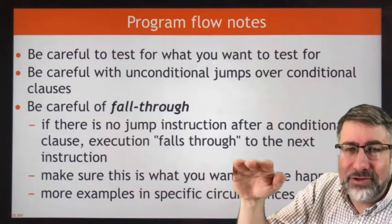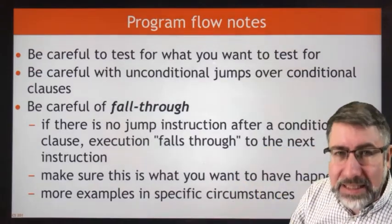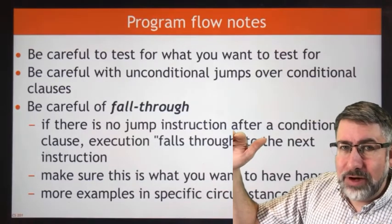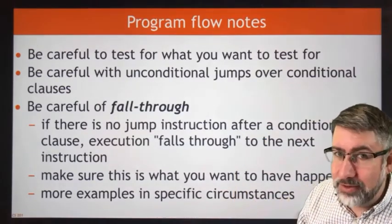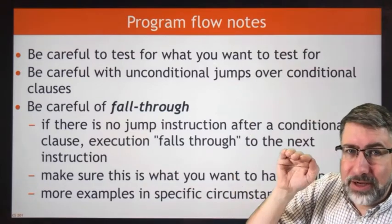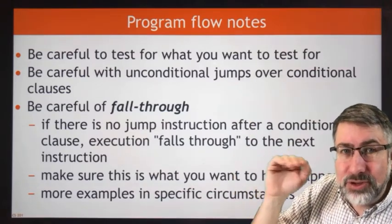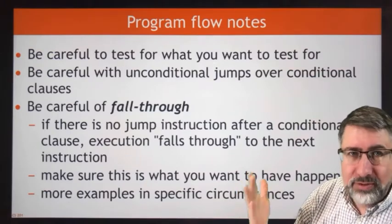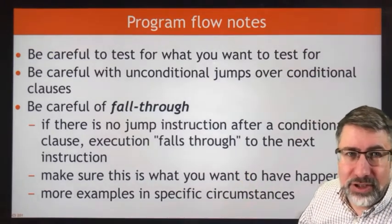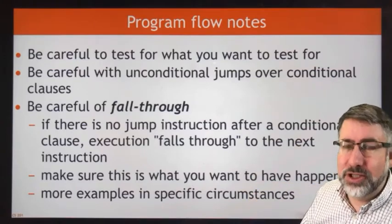Every instruction is completely independent. Once you've done your branch, your program counter has been updated and you're going to do the instruction that's at your program counter. If you haven't updated your program counter, you're doing the instruction after the branch. We call this fall-through - if there's no jump instruction after a conditional clause, execution falls through to the next instruction. This is a common place where people make mistakes.